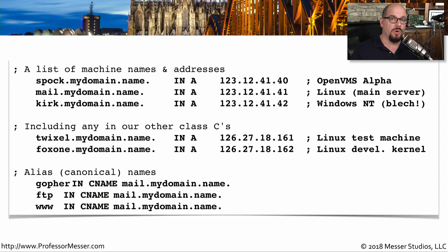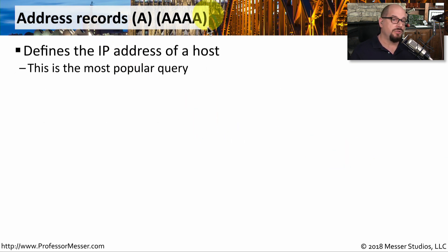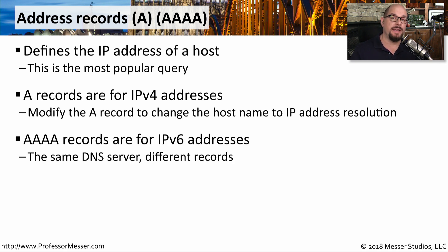One of the most important roles of a DNS is associating an IP address with a fully qualified domain name. If we look at this section of the lookup file, you'll see some machine names and IP addresses associated with those machine names. These address records are called A records or quad A records, and they're used to associate the name with an IP address. We use the A record to associate an IP version 4 address with the name of a device, and we use a quad A record to associate an IP version 6 address with the name of a device.